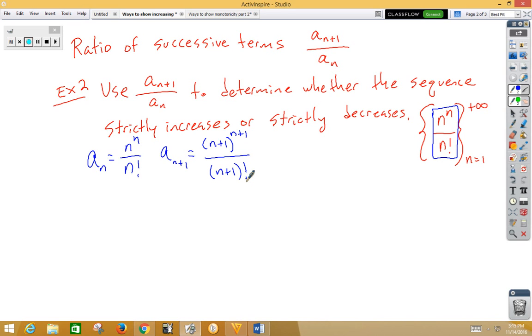Well, so the ratio test says that I have to have n plus 1 to the n plus 1 over n plus 1 factorial all over n to the n over n factorial. And we're trying to see, is this going to be greater than 1? It could be less than 1, but we're going to just assume that it's greater than 1 for now.